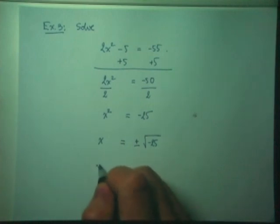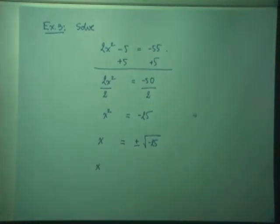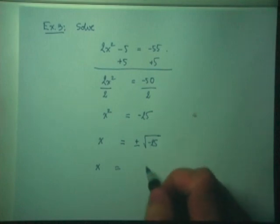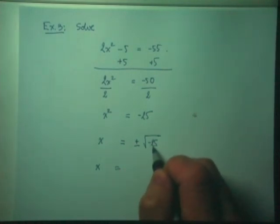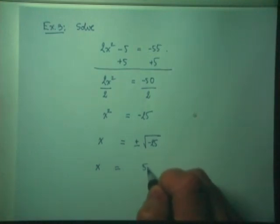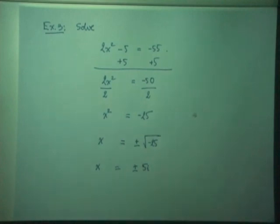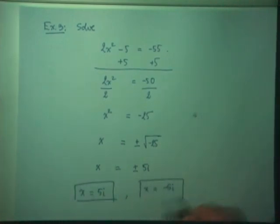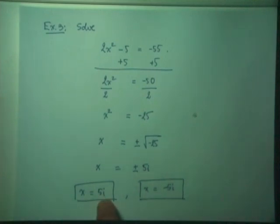We've learned that we can take the square root of a negative number. Square root of negative 25 equals 5i, so the answers are X equals positive 5i and X equals negative 5i — those are my two answers. Whenever you try to take the square root of a negative number, your answer always ends up with an i. More detailed explanation and examples can be found in class.